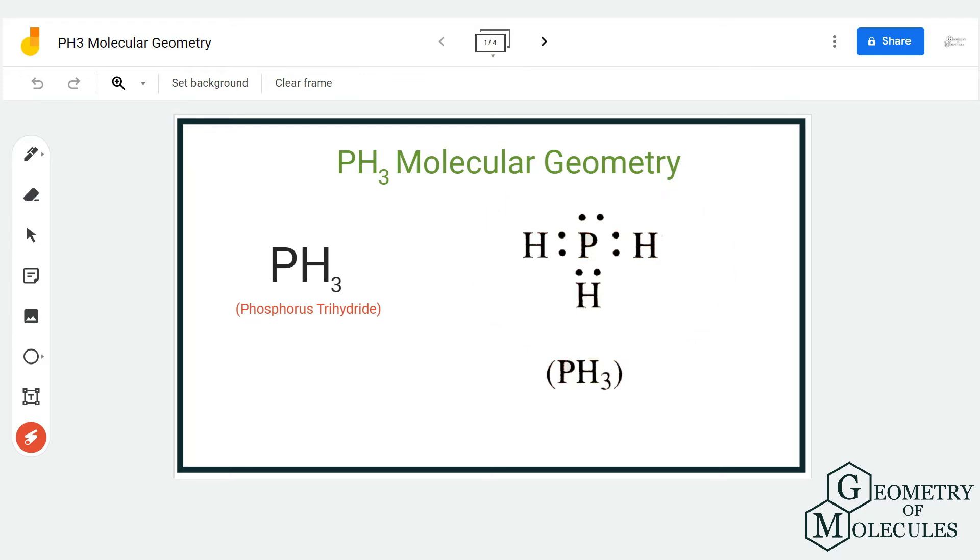To understand its molecular geometry, we are first going to look at its Lewis structure followed by the table that we will use to find out the steric number and its molecular geometry. Here is a Lewis structure for PH3 molecule in which the phosphorus atom is forming single bonds with three hydrogen atoms and it also has a lone pair of electrons.